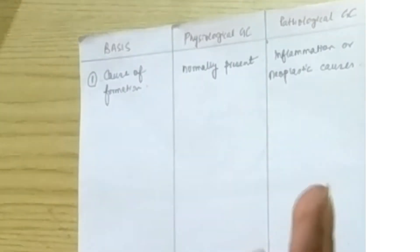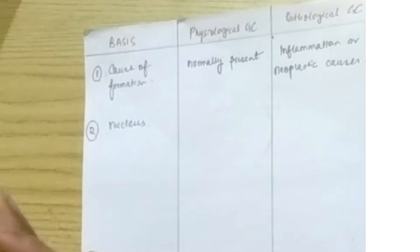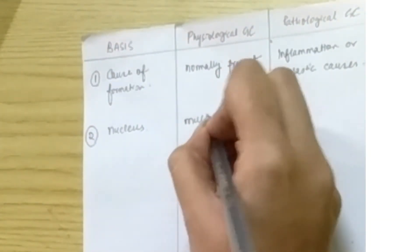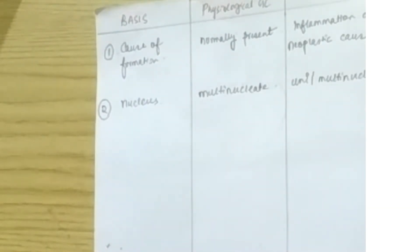Now the second point of difference is the nucleus. As I've already mentioned, physiological giant cells will have multi-nucleate structure, and pathological giant cells, as they have some pathology, they will have either one nucleus or multi-nucleate.